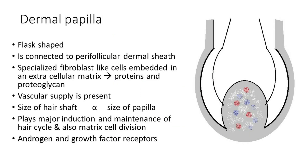The dermal papilla is flask-shaped and connected to the perifollicular dermal sheath. It is made up of specialized fibroblast-like cells embedded in an extracellular matrix containing proteins and proteoglycans. It is the site where the hair follicle gets its vascular supply. The size of the hair shaft is directly proportional to the size of the dermal papilla. The dermal papilla plays a major role in induction and maintenance of the hair cycle and matrix cell division; androgens and other growth factors regulate this process.